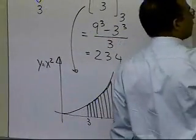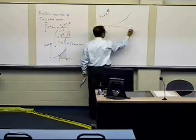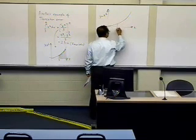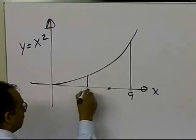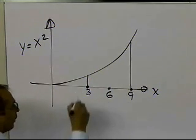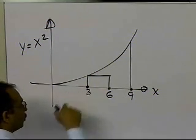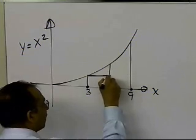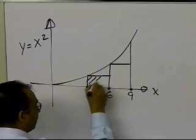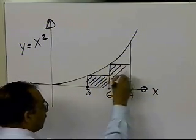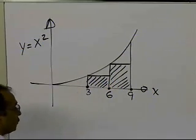Looking at the graph of x squared with x going from 3 to 9, let's take the midpoint at 6. We draw a rectangle with height equal to the value of the function at 3 going from 3 to 6, and a second rectangle with height equal to the value of the function at 6 going from 6 to 9. These two rectangles approximate the area under the curve from 3 to 9.